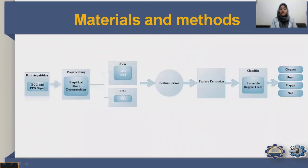The methodology flowsheet describes how the method flows. First, ECG and PPG signals were acquired. In pre-processing, the empirical mode decomposition technique was applied, producing IMFs; IMF1 and IMF2 of ECG and IMF1 of PPG were selected. ECG and PPG features were then fused together and features were extracted. The ensemble bagged trees classifier was used, producing maximum accuracy, and the four classes — disgust, fear, happy, and sad — were distinguished.